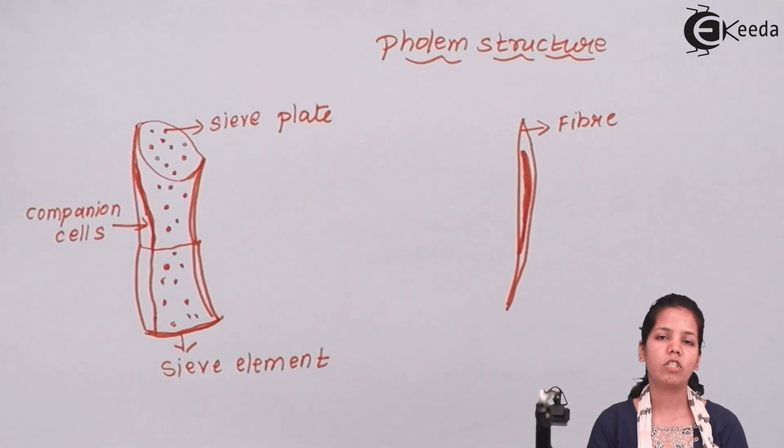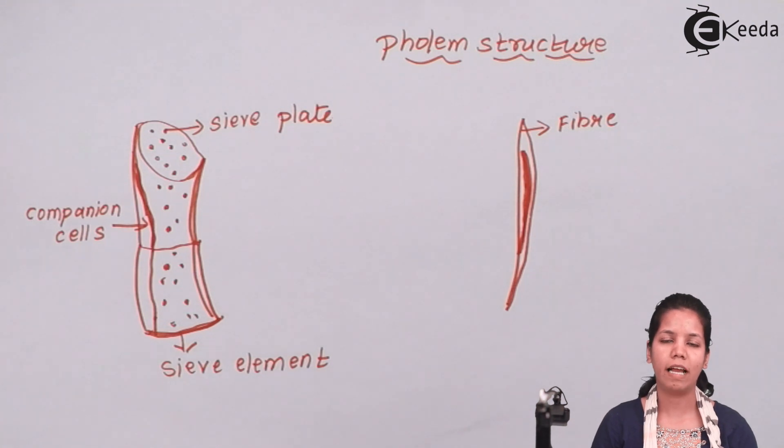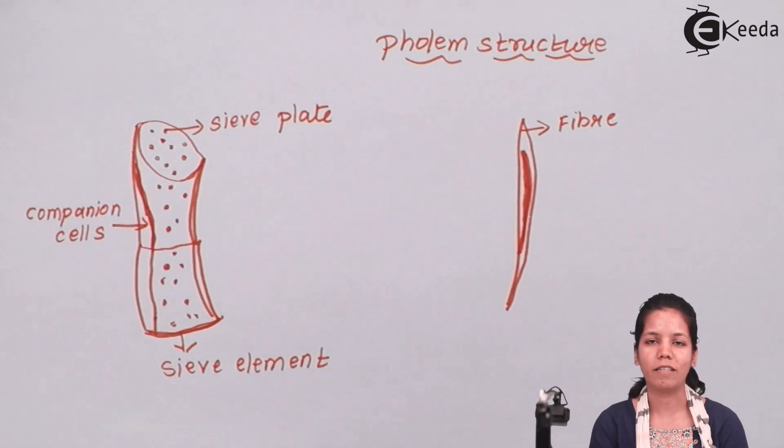Students, in this part of the chapter we have studied about phloem, the structure of phloem, and the different kinds of phloem present inside the plant. We have studied how phloem helps in conduction of material and the different types of cells that together form up the structure of phloem. I hope you all are clear about this concept. Thank you!